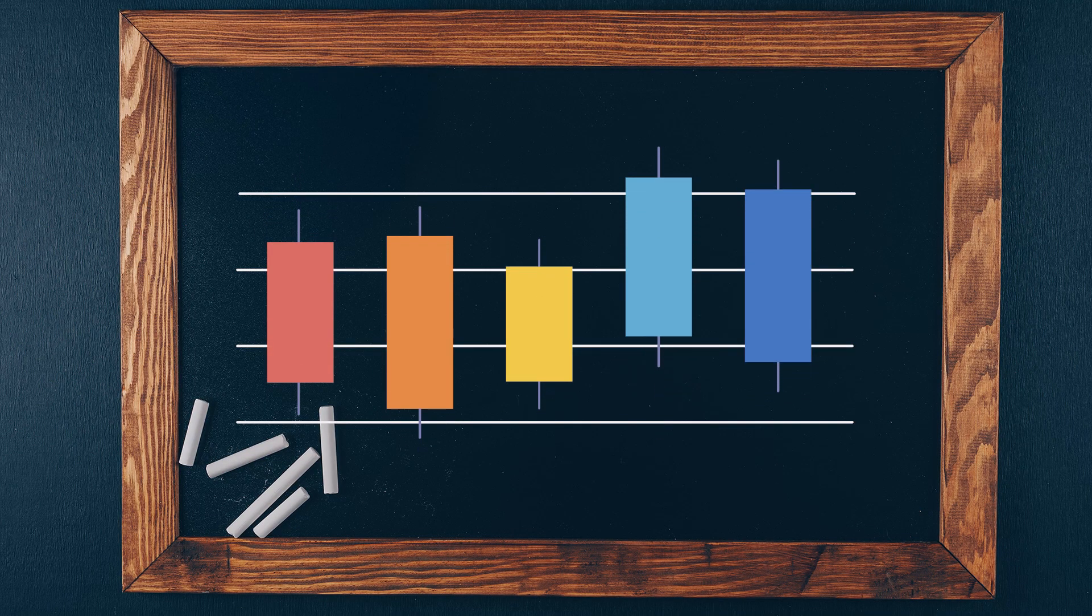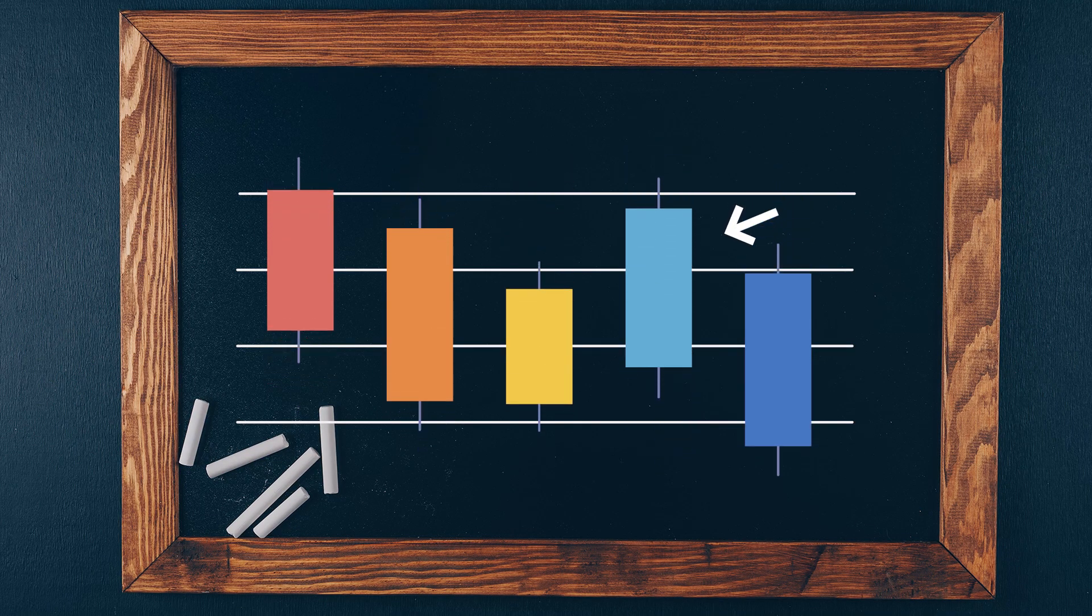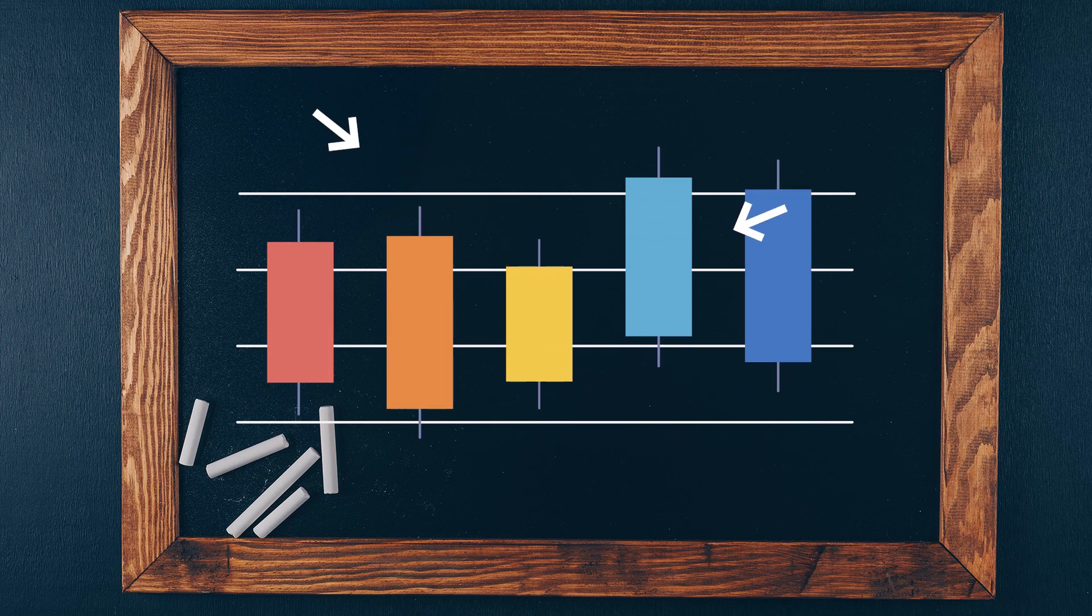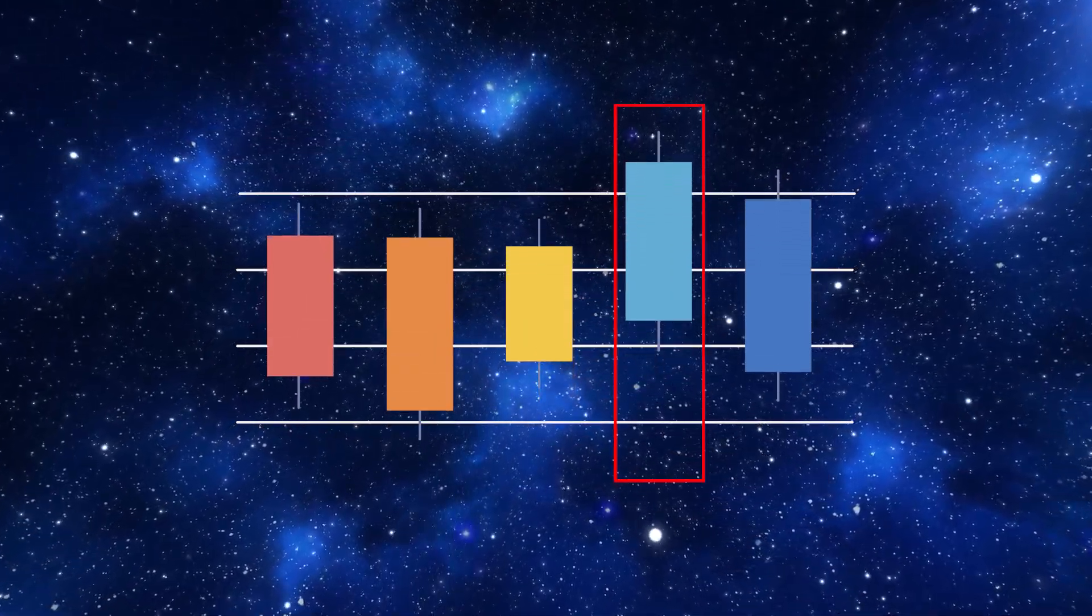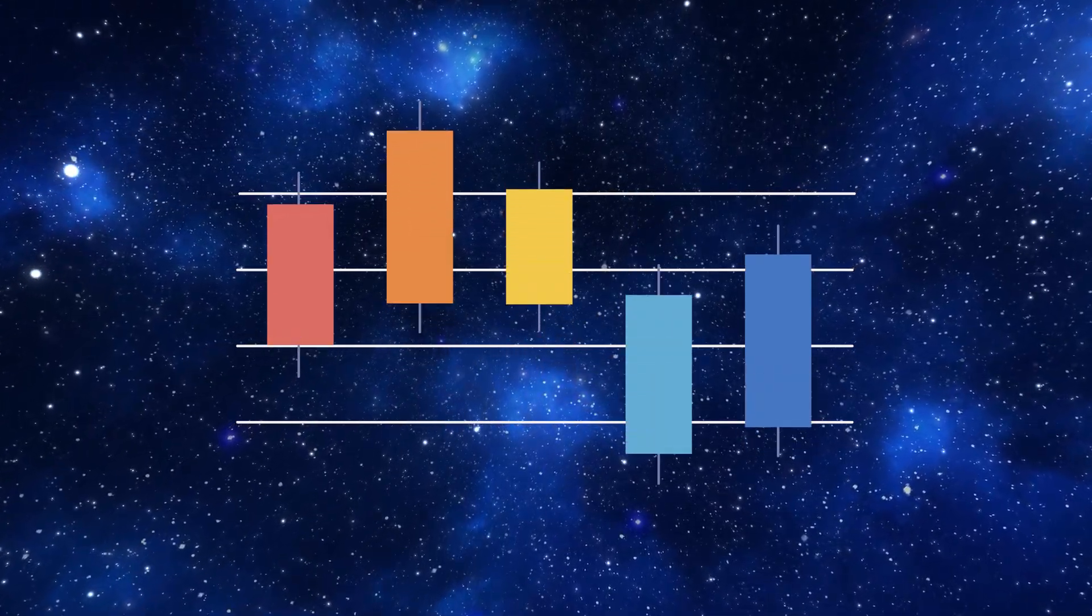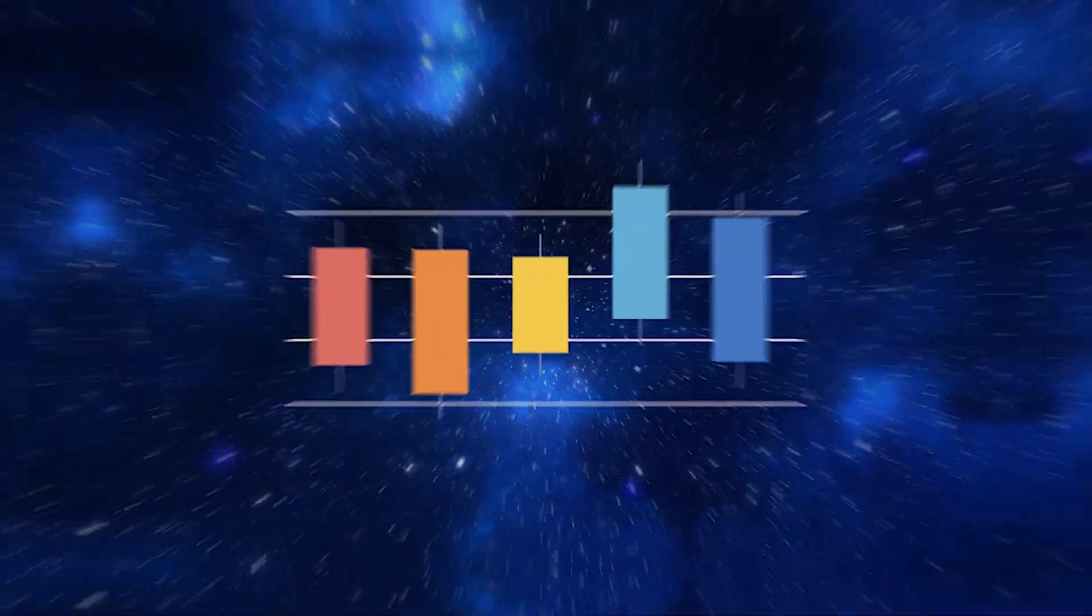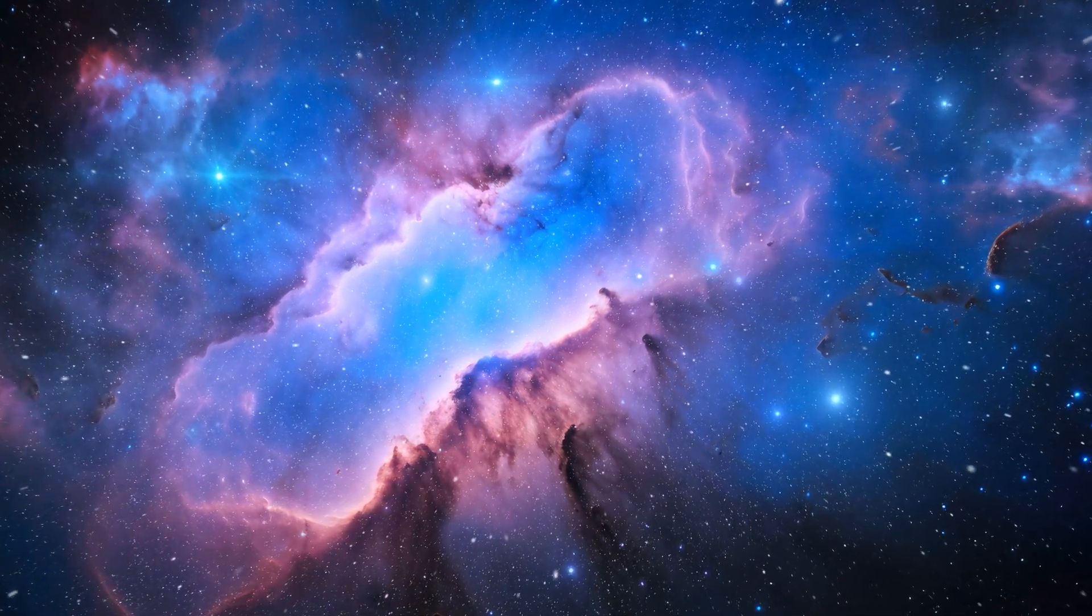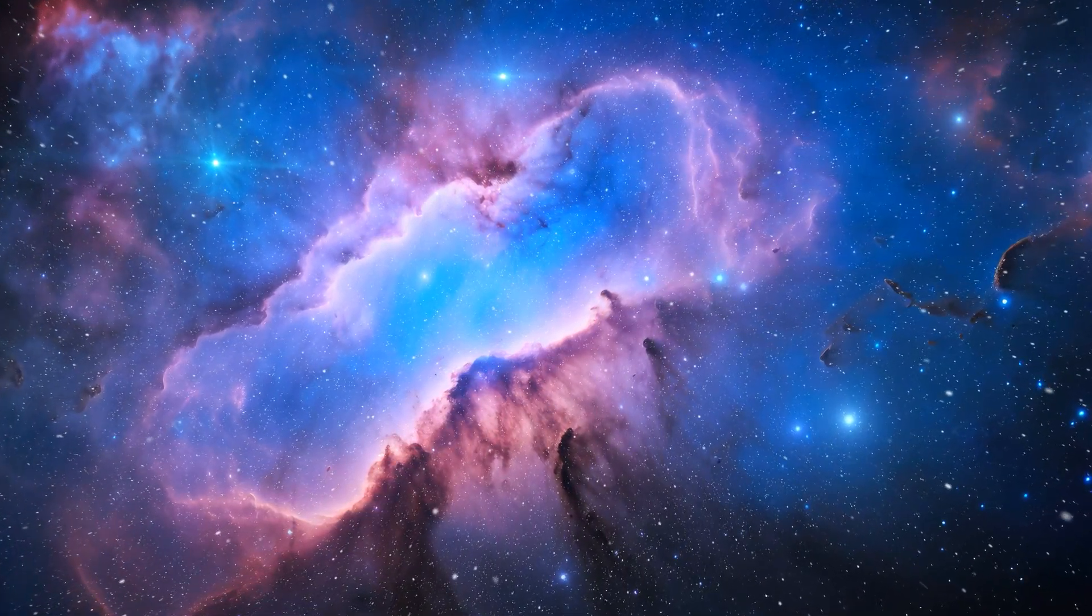For example, hydrogen absorbs light at one wavelength, while oxygen absorbs at another. If we detect absorption at hydrogen's wavelength, we can infer that the light passed through a hydrogen-rich environment before reaching us. Regardless of where light originates in the universe, these spectral lines appear at the same wavelengths.